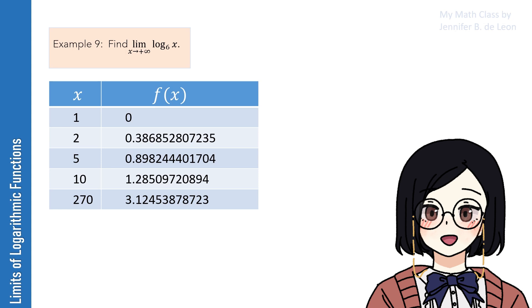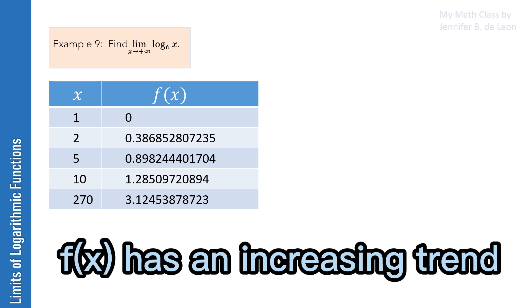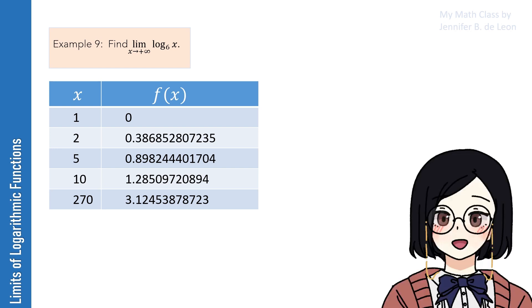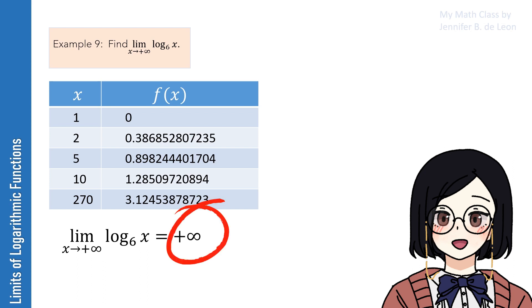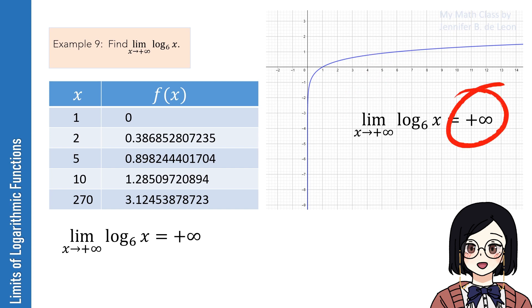Replacing x with some values which are written in increasing order, we can see that the values of the function have an increasing trend also. Hence, we say that the limit of the logarithm of x to the base 6 as x approaches positive infinity is positive infinity. Looking at the graph of the function, this confirms our answer that the limit of log base 6 of x as x approaches positive infinity is really positive infinity.